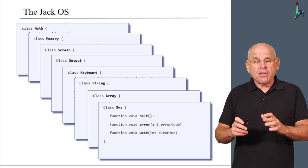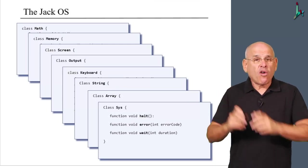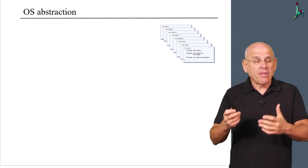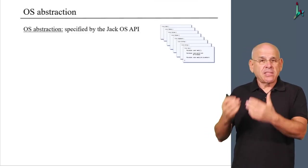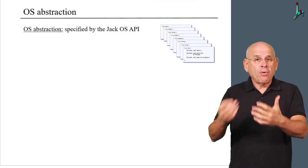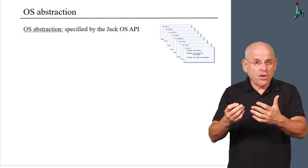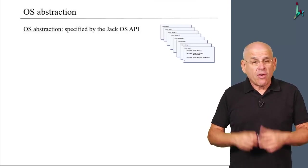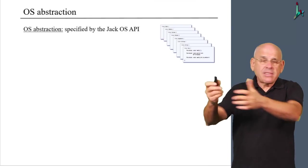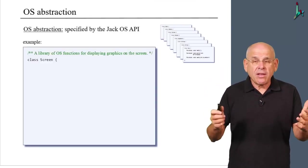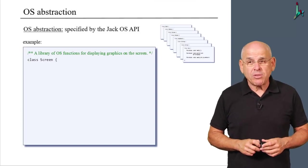I wish to remind you that at least in this form of description, the operating system is nothing more than an abstraction. It is basically a set of APIs that describe what the operating system can do for you or for other application programmers. For example, let us sample one class from this set of eight classes, screen, and take a look at this class description.